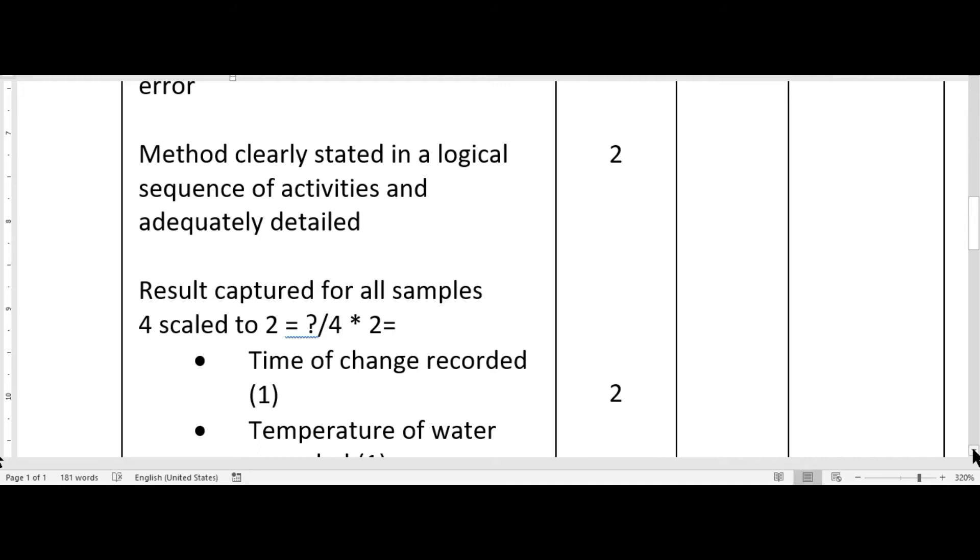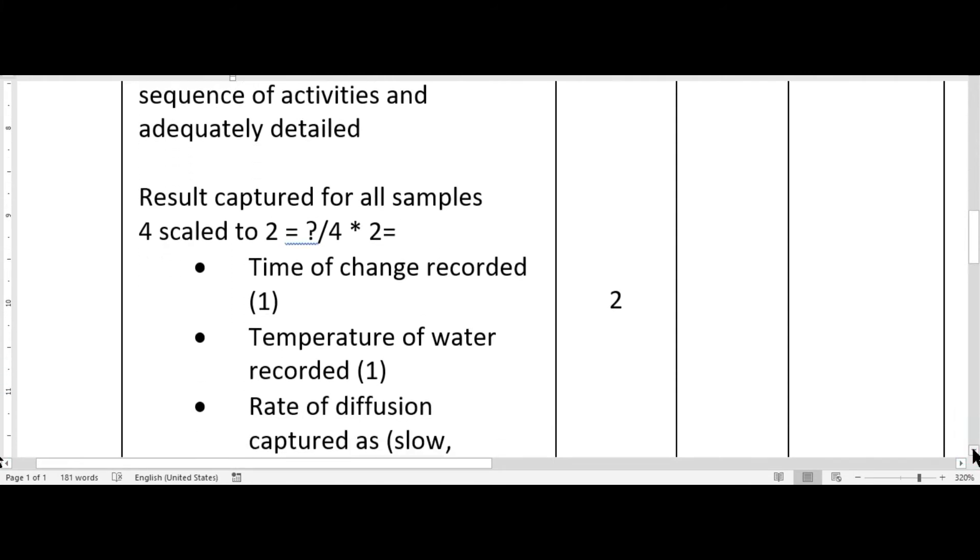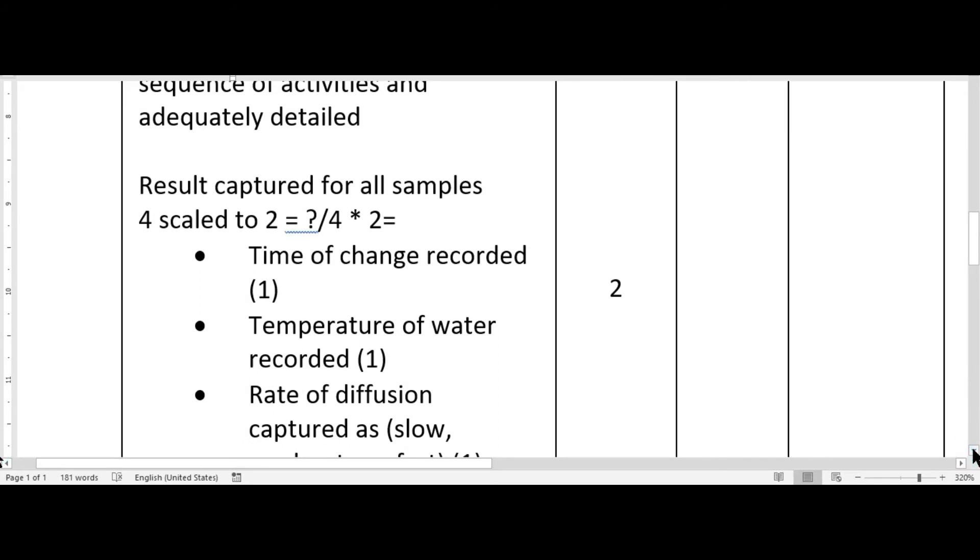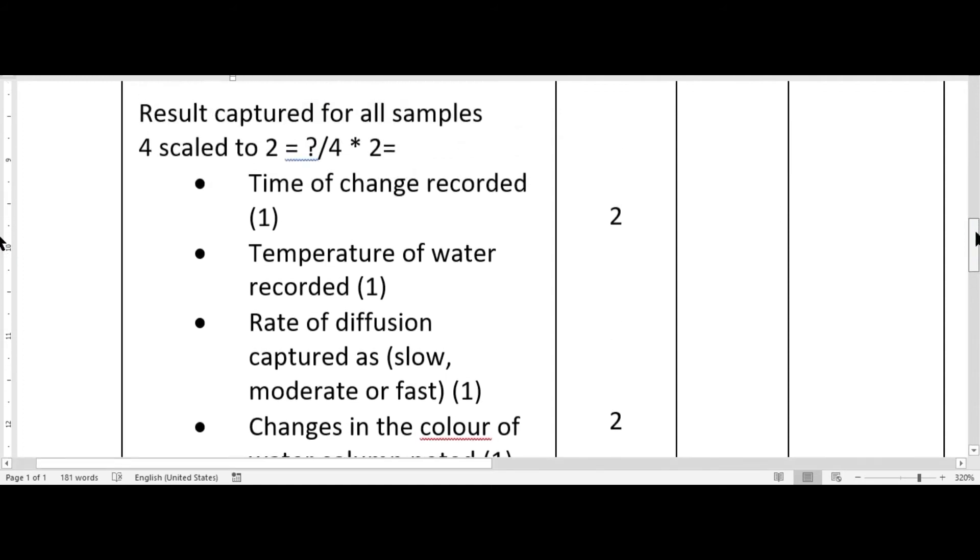So of course the time of the change must be recorded. That's the time of the color change. You are supposed to record the temperature of the water and that is going to be before and pretty much after the experiment. You want to ensure that you have it properly recorded or your teacher might guide you accordingly. Now the rate of diffusion is supposed to be captured and it can be captured as being fast, moderate or slow and you're awarded a point if you did that well in the lab. Now changes in the color of the water column must be noted and if all that is done then you are going to be scaled to two.